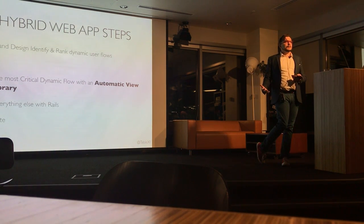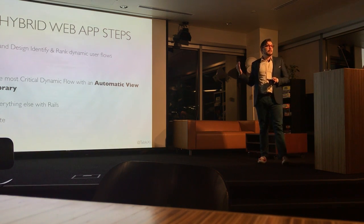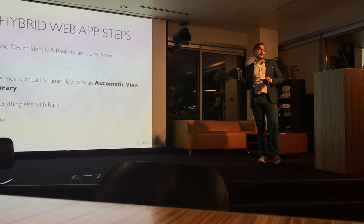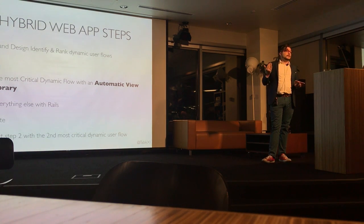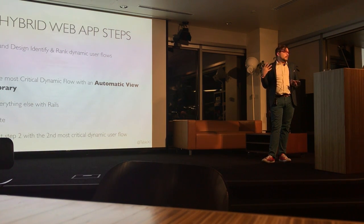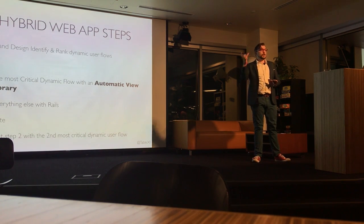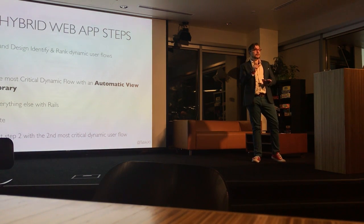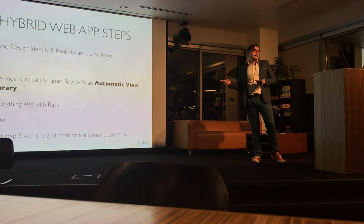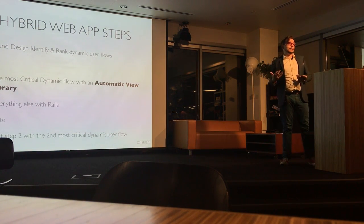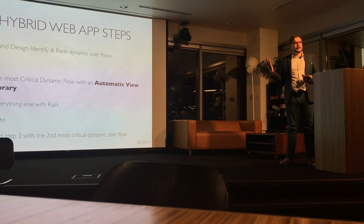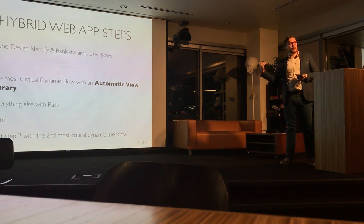Afterwards, validate. Get this in front of users, make sure it's working, make sure it's worth the investment. Make it a little bit better. Then when you're ready for the next feature, take the second most important user flow that could benefit from dynamism and move it from Rails to that automatic view library — as little as possible. Keep repeating until you run out of budget or the patience of your managers. Ideally you'll hit diminishing returns.